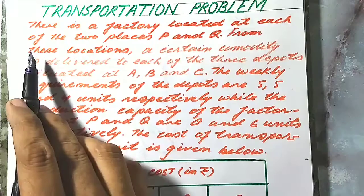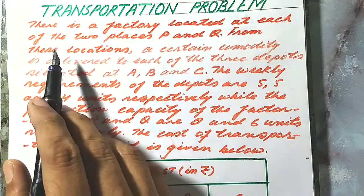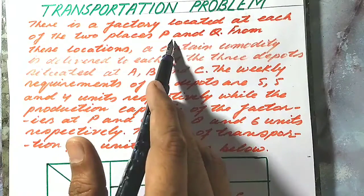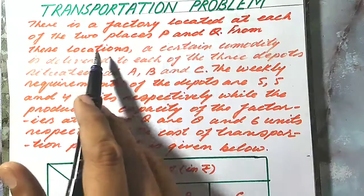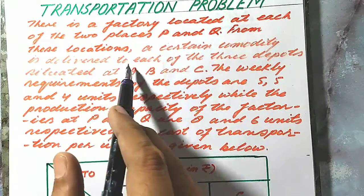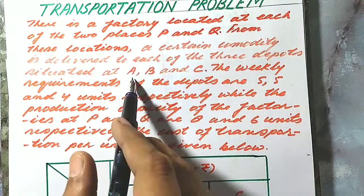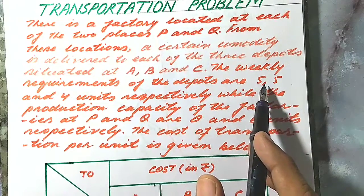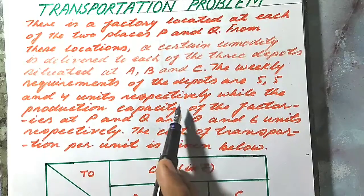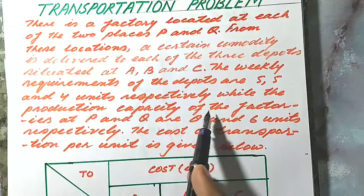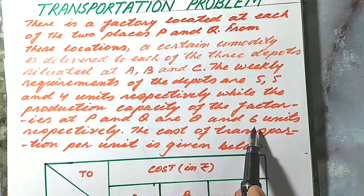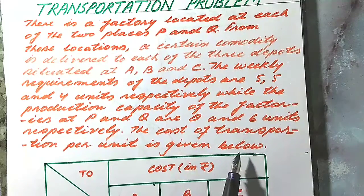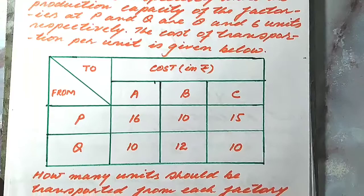Once I will read for you to make you understand the concept. The question is: there is a factory located at each of the two places P and Q. From these locations, a certain commodity is delivered to each of the three depots situated at A, B and C. The weekly requirements of the depots are 5 and 4 units respectively, while the production capacity of the factories at P and Q are 8 and 6 units respectively. The cost of transportation per unit is given below in the form of a table.